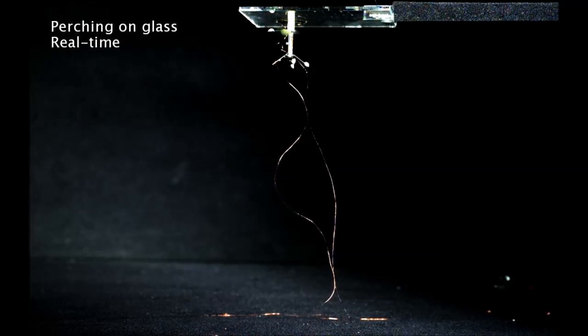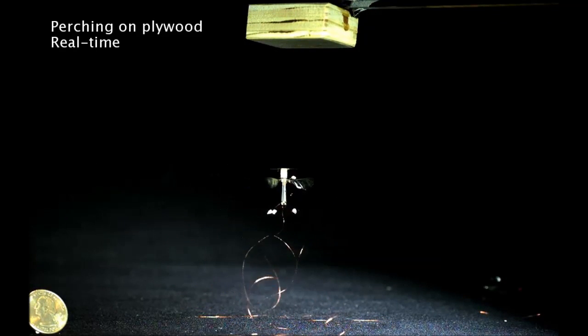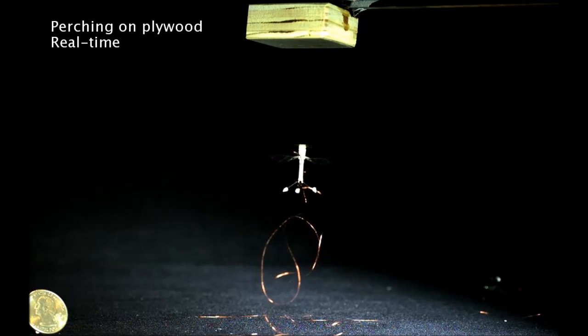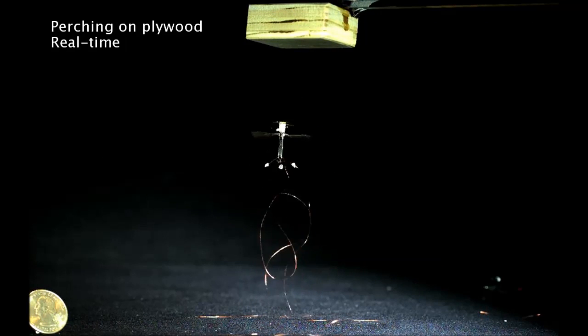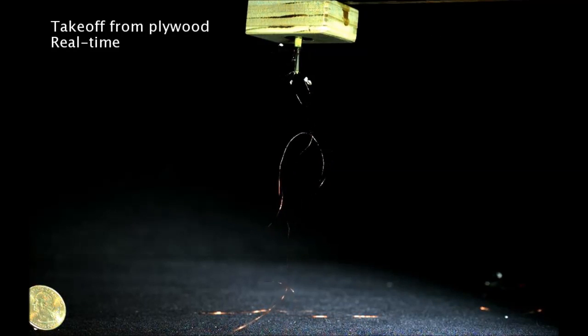But the drawback is that they're very inefficient at flying. When you perch, though, you can reduce that power consumption dramatically, perhaps even down to zero. So it's really an energy savings that could hypothetically substantially increase the mission lifetime for these types of robots.